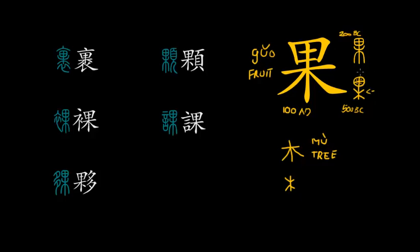When moving from the oracle bone script to the seal script, all they did was remove the four dots. I know many of you have noticed that the top of the character looks like 田 (tián), meaning field. But it has very probably absolutely nothing to do with that character. It is just a graphic simplification — all they did was remove the four dots for simplicity, and the regular script is basically just a formatted version of the seal script.